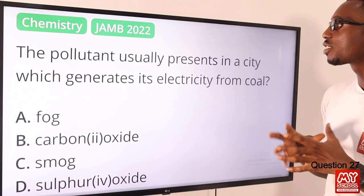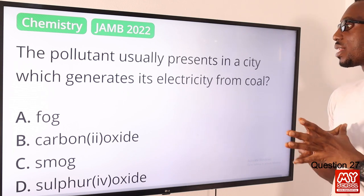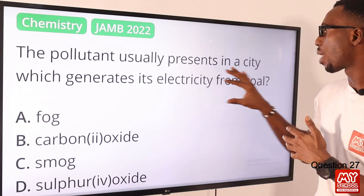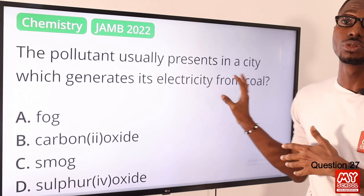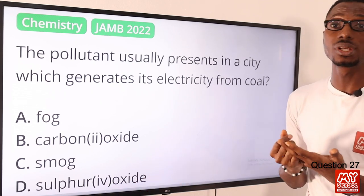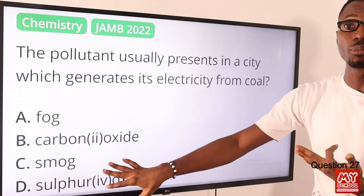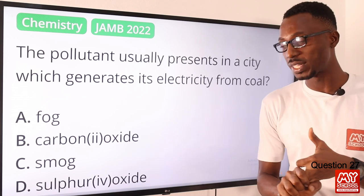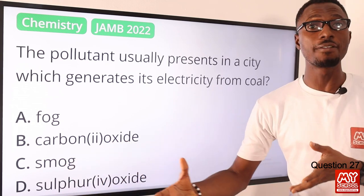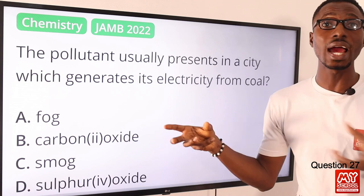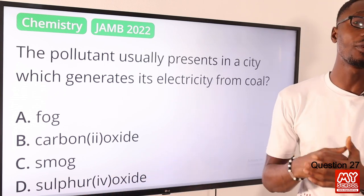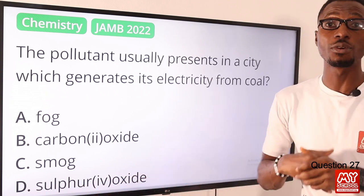Question 27. The pollutant usually present in a city which generates its electricity from coal is what? We have some pollutants you can get when your major source is coal to generate electricity: sulfur dioxide, oxides of nitrogen, and carbon dioxide. One of the options is carbon monoxide — that is not carbon dioxide, so it is out of the equation. The major pollutant can cause smog from oxides of nitrogen, but the most direct viable pollutant here is sulfur dioxide, which causes acid rain. So the correct option is option D for sulfur dioxide.